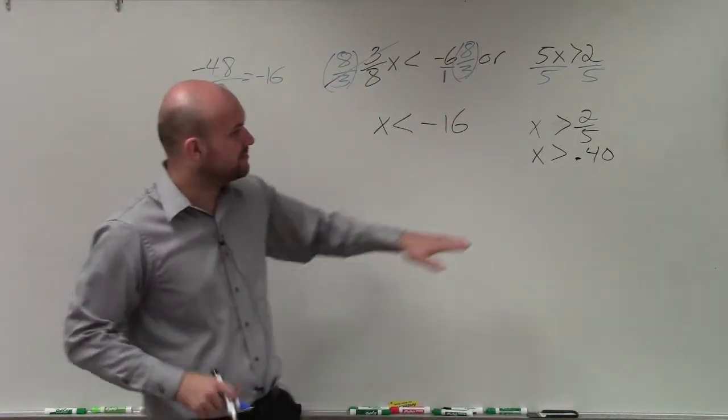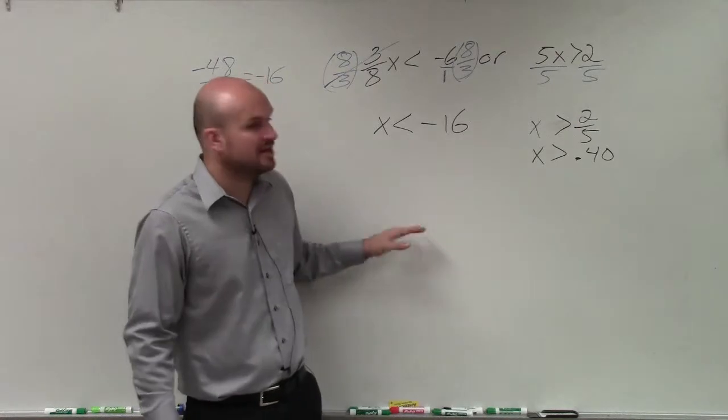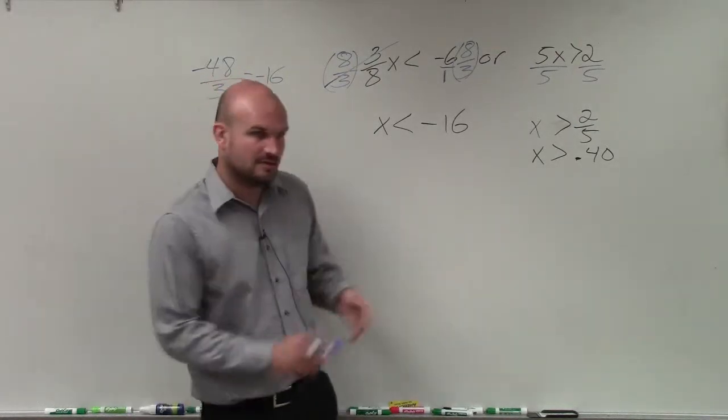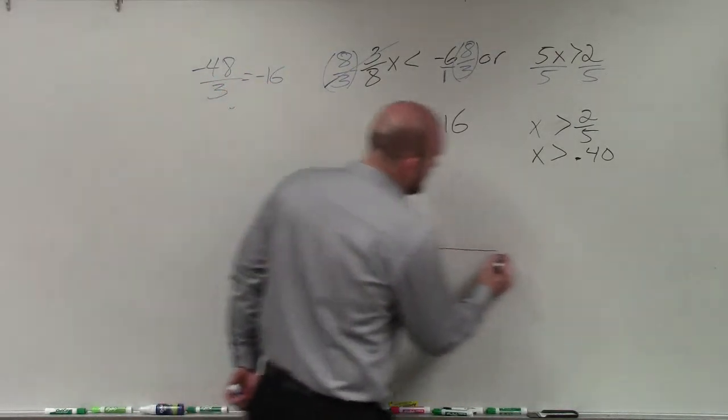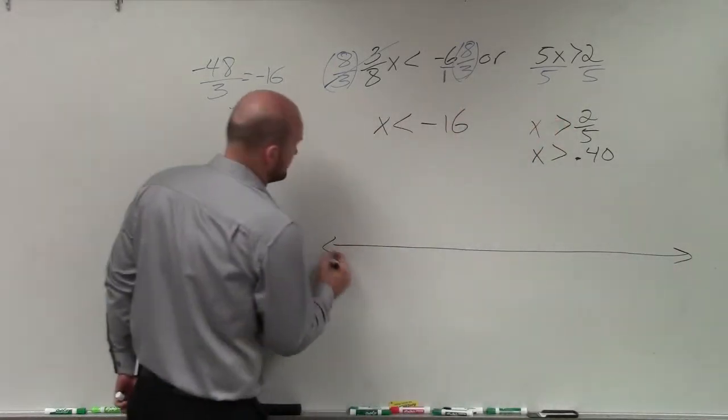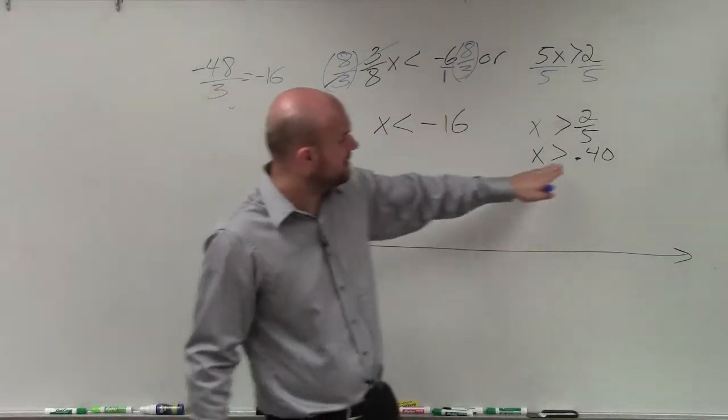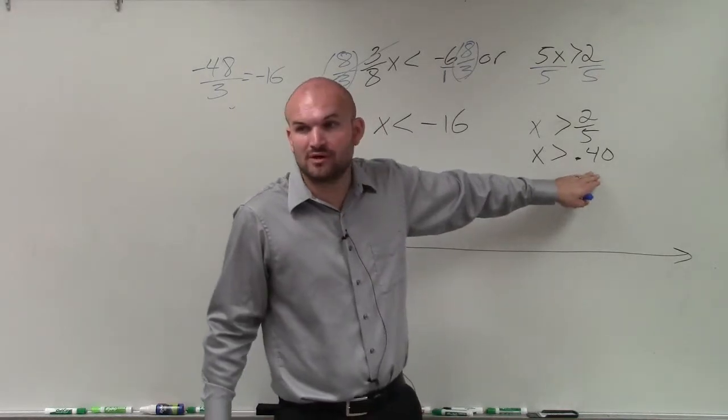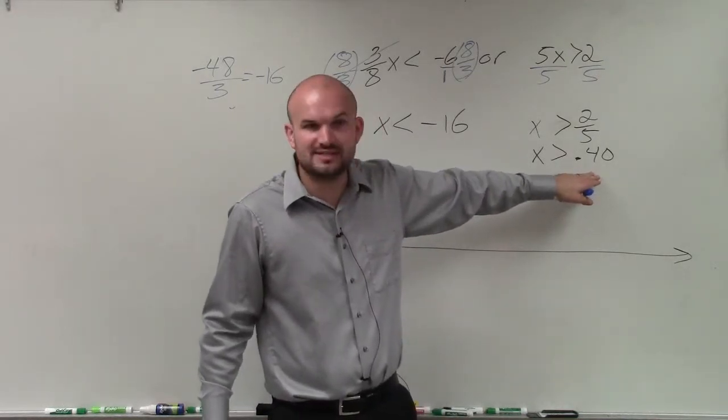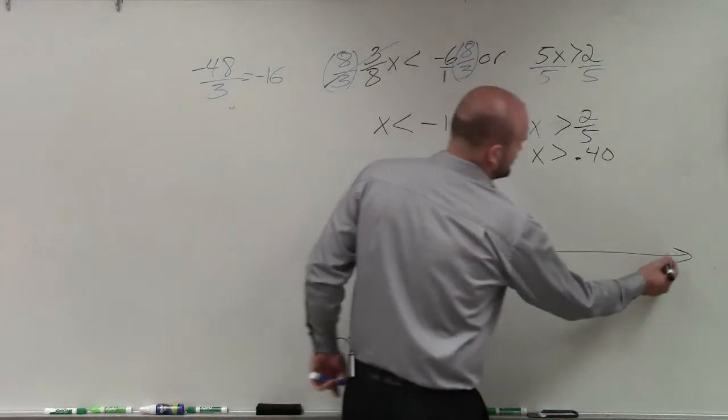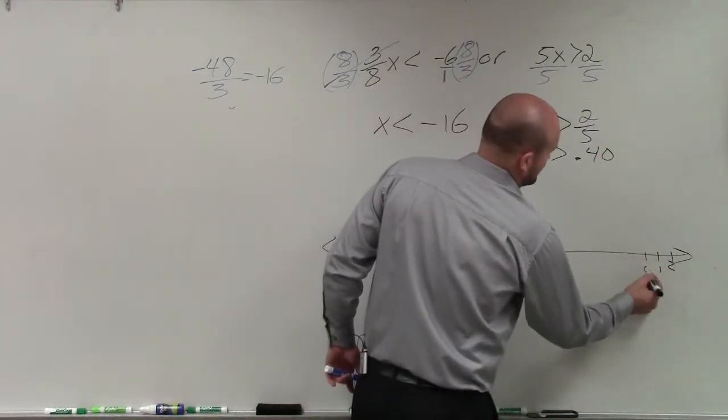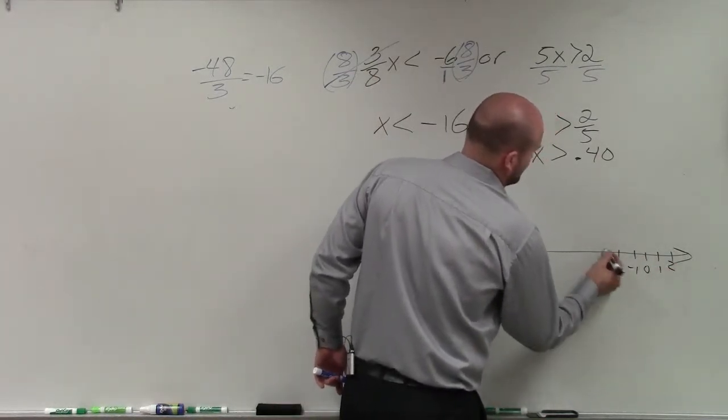So I would use my calculator or use my understanding of converting fractions to decimals to rewrite that as 0.40. The reason why is when I do my number line, I'm still going to keep my number line as integers. All right? So I draft up a number line. And obviously, we need to contain negative 16 and we need to contain 0.40, which is between 0 and 1. So let's just do 2, 1, 0, negative 1, negative 2.